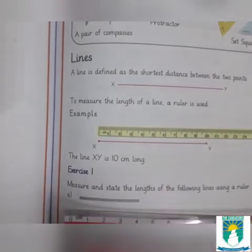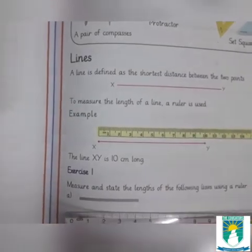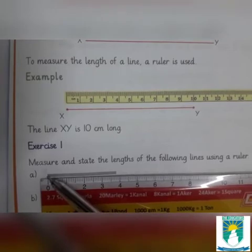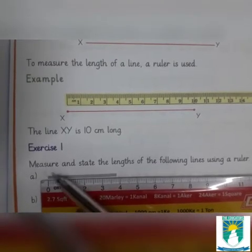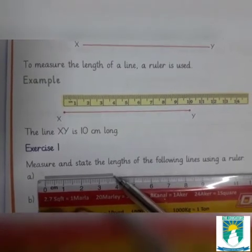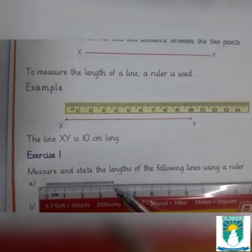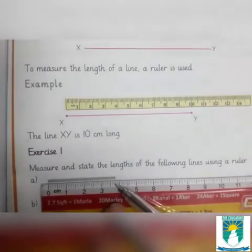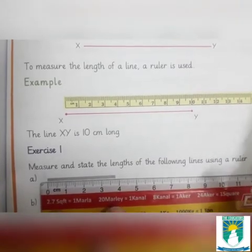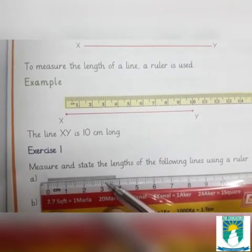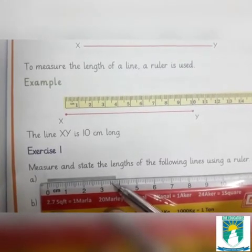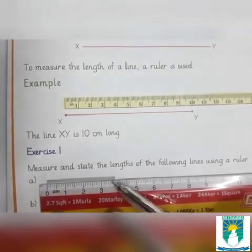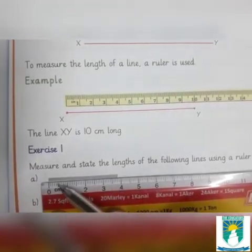Use your ruler for measuring the line. Keep the ruler's zero line at one end and see where the second end finishes. It is on three. Reading the markings: one, two, three, four, five, six, seven, eight — so our line is three point eight centimeters.